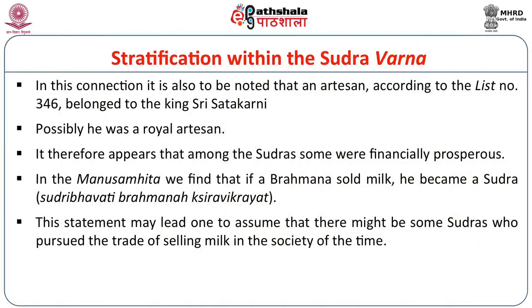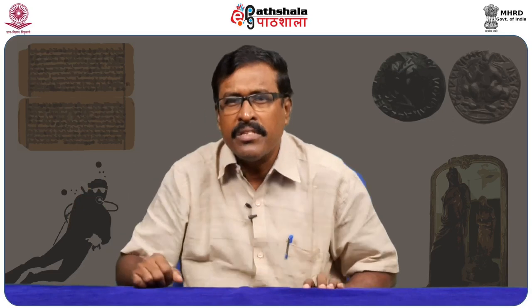In the Manusmriti we find that if a Brahmin sold milk he became a Shudra — in other words a Shudra became a seller of milk, taking to the profession of trade. There also we find them being stratified along the lines of trading. Their traditional varna duties placed them at the feet of the other three upper varnas, yet here we find them becoming sellers. This is how social stratification was maintained among the Shudra varna.